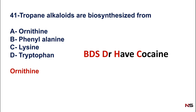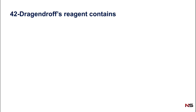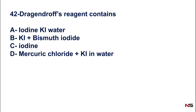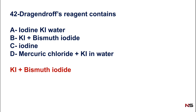Question 42: Dragendorff's reagent contains — option A) iodine potassium iodide water, B) potassium iodide bismuth iodide, C) iodine, D) mercuric chloride plus potassium iodide in water. The correct answer is option B — potassium iodide plus bismuth iodide. That is Dragendorff's reagent.